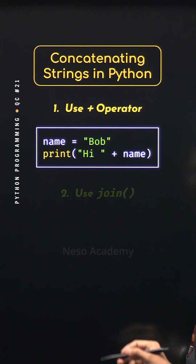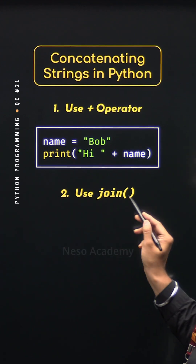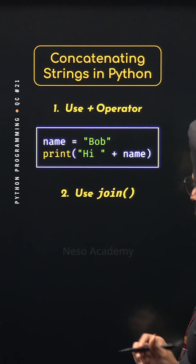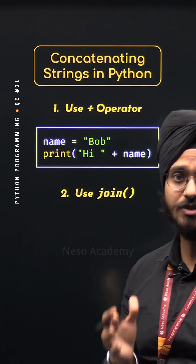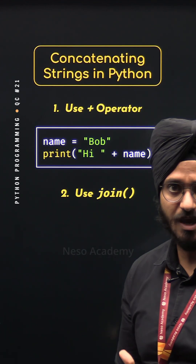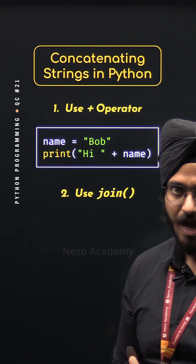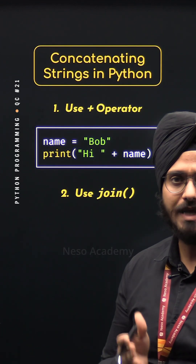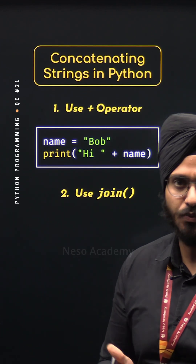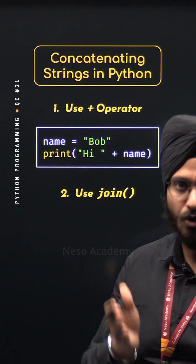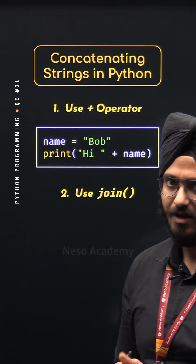Way number two: use the join method. We can use the join method on a list of strings if we want to concatenate them. And if we want to place a separator between them, we can also do that.